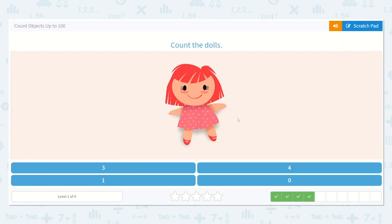Now let's count the dolls. I don't feel like I need to draw a line under it because I can see there is just one doll. So I'll click on the one.